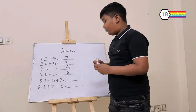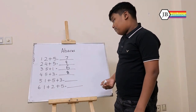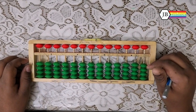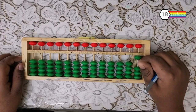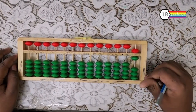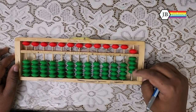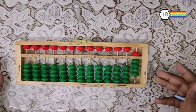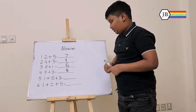Now, the fifth question is 1 plus 5 plus 3. So the first number is 1. Then we need to add 5. And finally, we need to add 3 — 1, 2, 3. Now we can see that the answer is 9. Let's write 9 for the fifth answer.